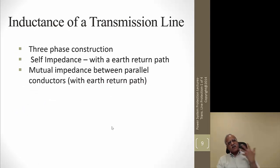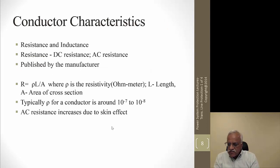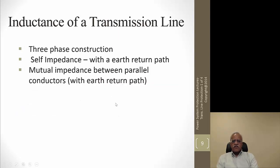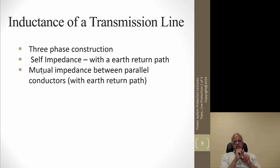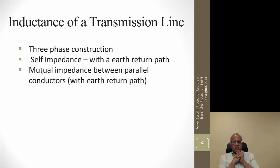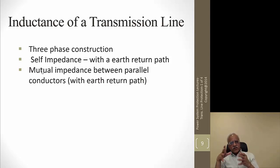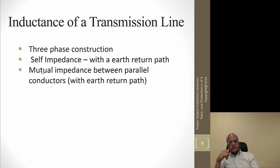For inductance of a transmission line, we consider a three-phase construction with self impedance and mutual impedance. A conductor opposes current flow through resistance, and inductance opposes any change in current. In a 60 Hz alternating current system, the inductance of the wire opposes the current — this is called self impedance. If two wires are next to each other in a three-phase system, current flowing on one phase induces a voltage on the other phases; the induced voltage divided by the current gives mutual inductance.